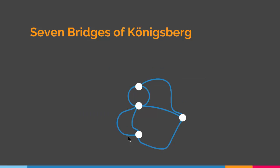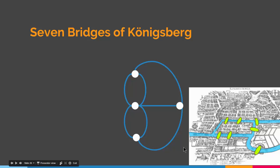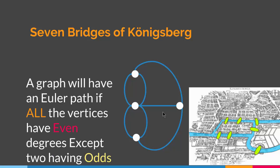If we take this graph and modify it a little bit, we can straighten out the edges. The problem asks us to devise a path that visits each edge exactly once — meaning, is there an Euler path in this graph? We know the condition for an Euler path: all the vertices have to have even degrees except two of them having odd degrees. Let's check: this vertex has degree 3, this vertex has degree 5, this one has degree 3, and this one has degree 3. Since not all vertices have even degrees except two having odd degrees, there is no Euler path in this graph, and that is the whole idea.